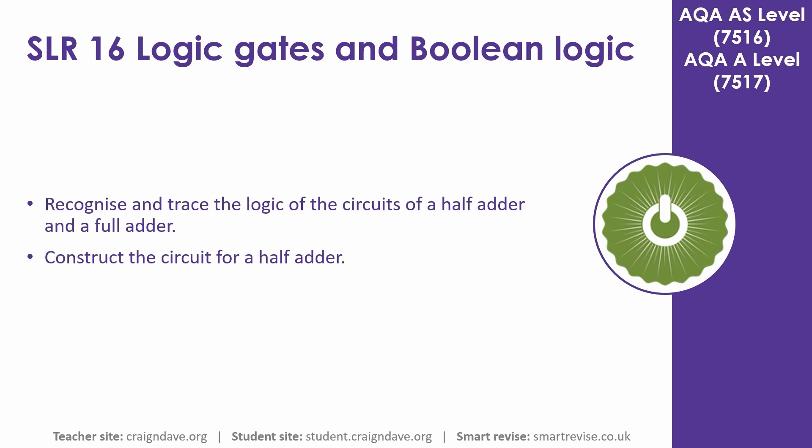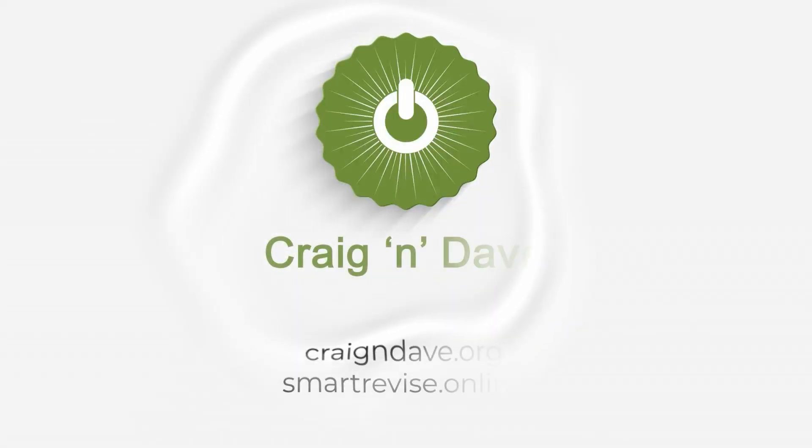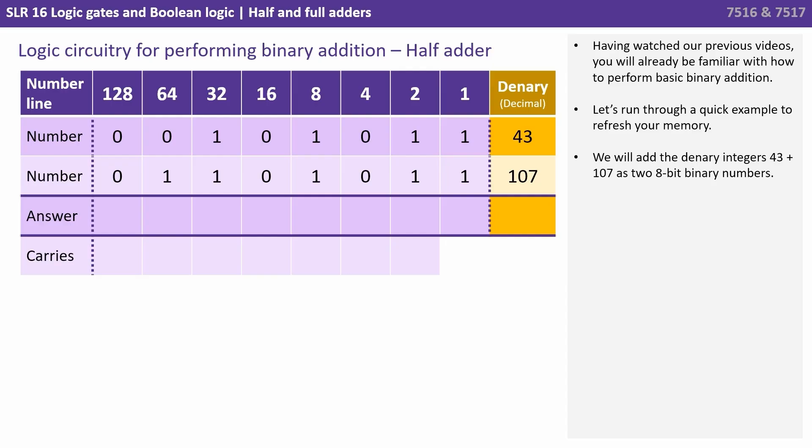In this video we're going to be discussing an important logic circuit called the half and full adder. Having watched our previous videos you will already be familiar with how to perform basic binary addition. Let's run through a very quick example to refresh your memory. We will add the denary or decimal integers 43 to 107 as two 8-bit binary numbers.